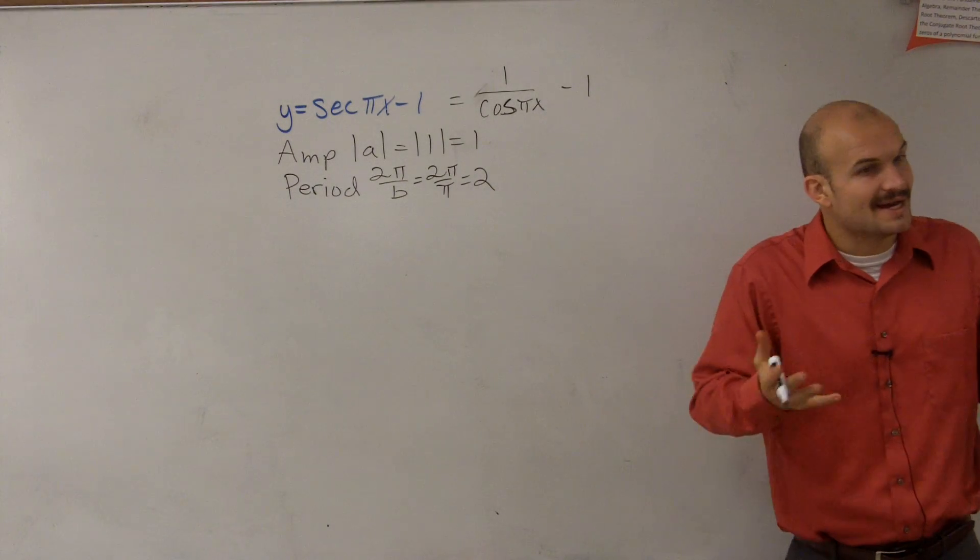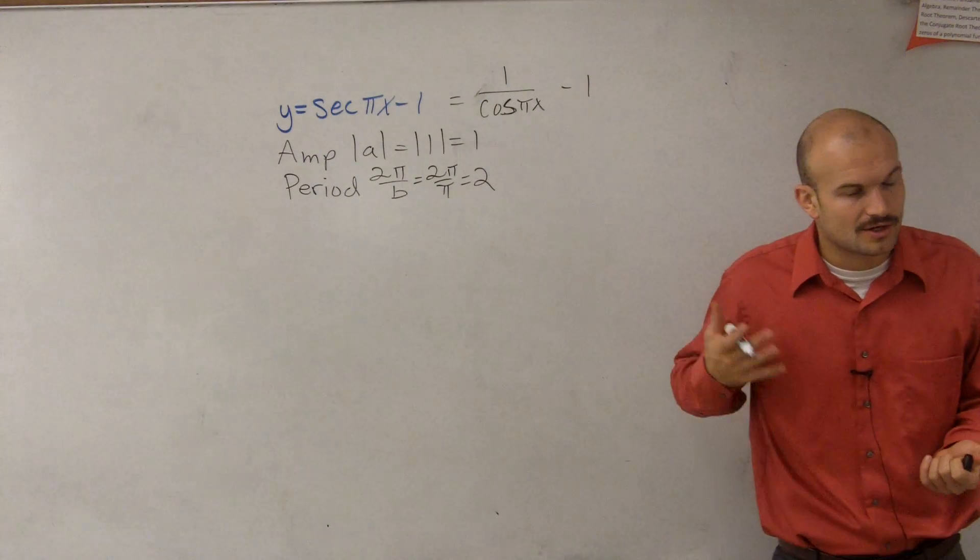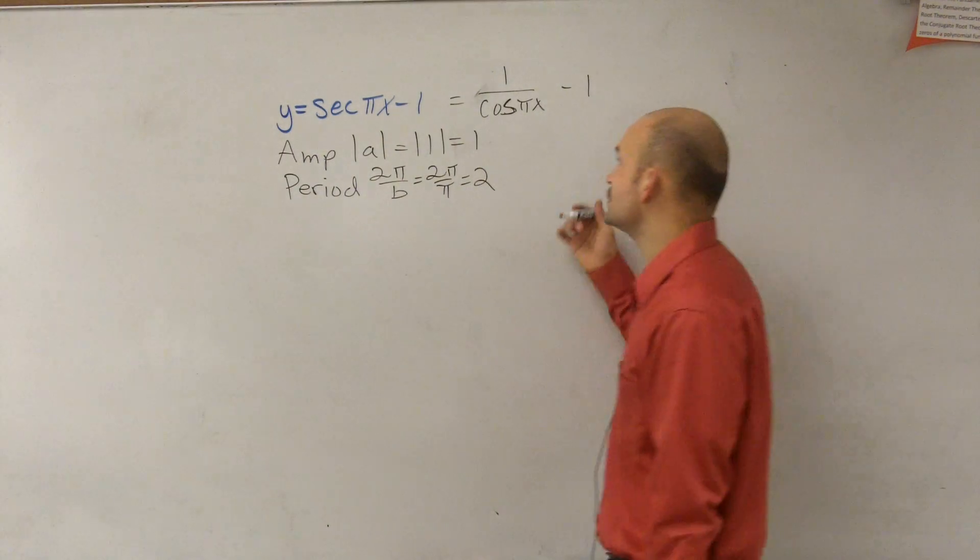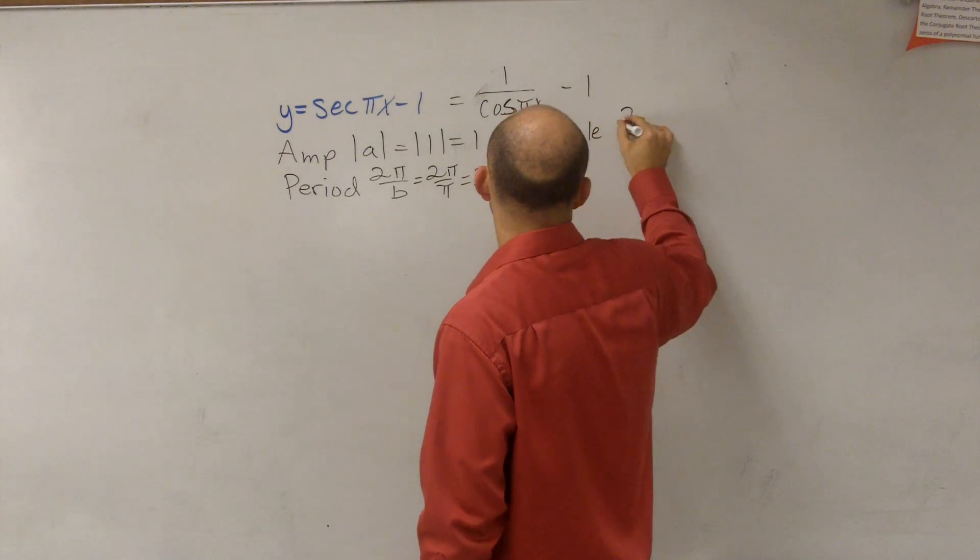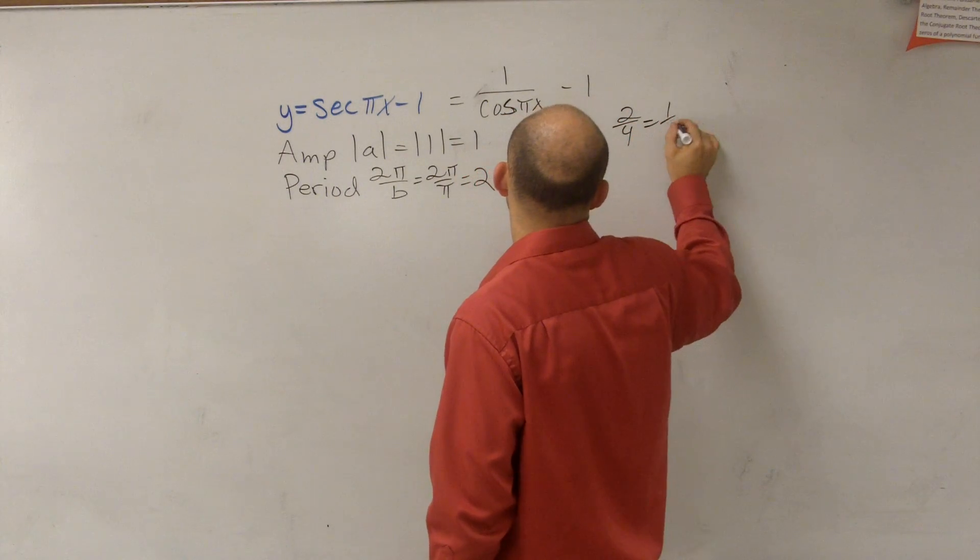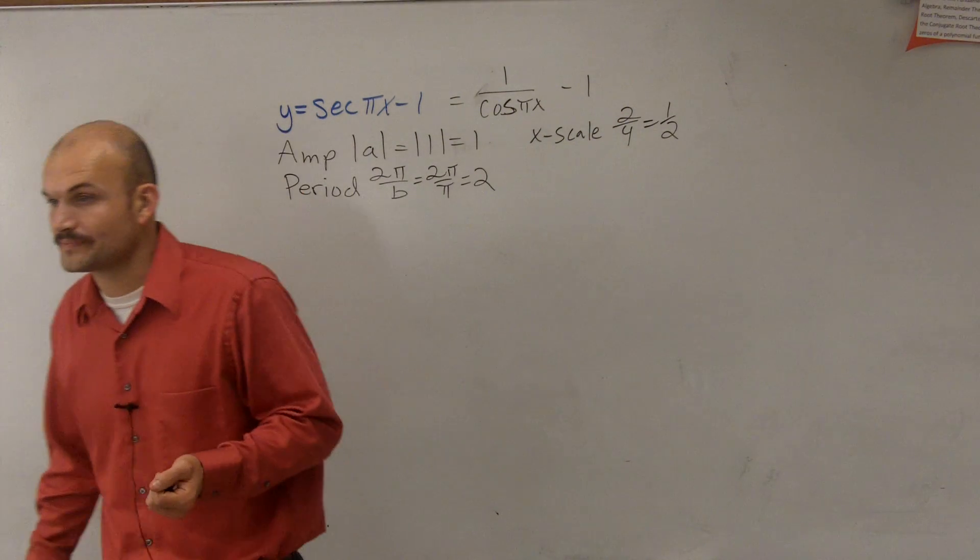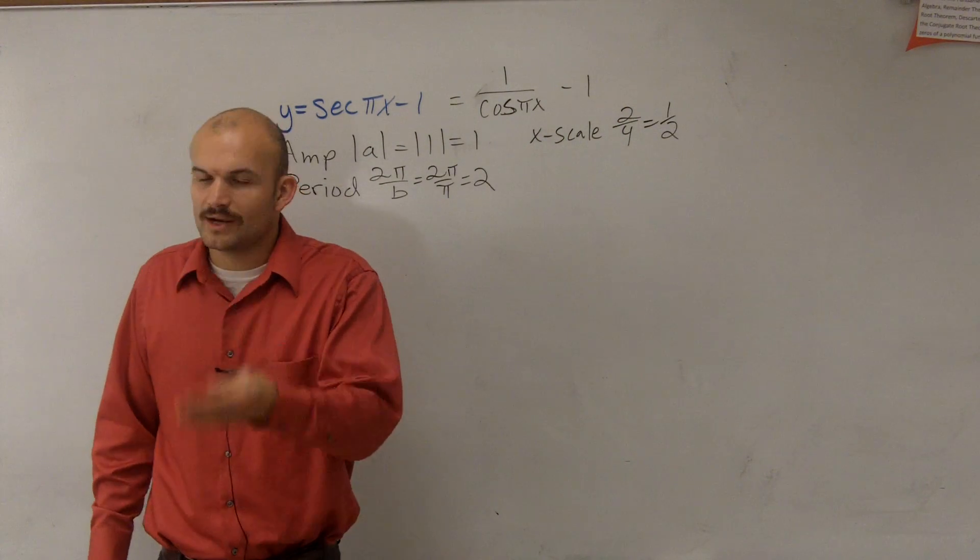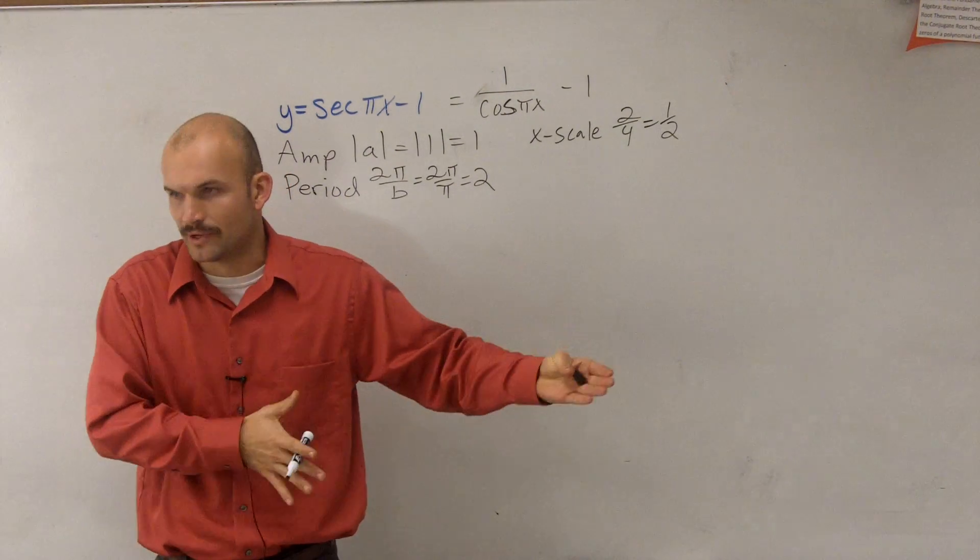Then what we did is we looked at the x scale. And remember, the x scale for your cosine and sine functions, always what we took is we took our period and divided it by 4. So now we get an x scale of 1 half.